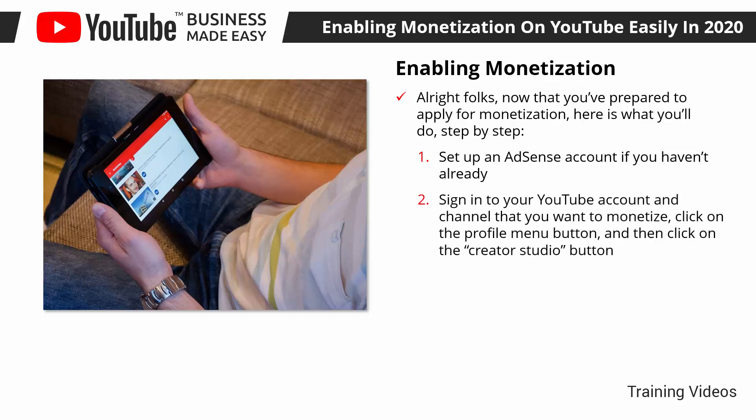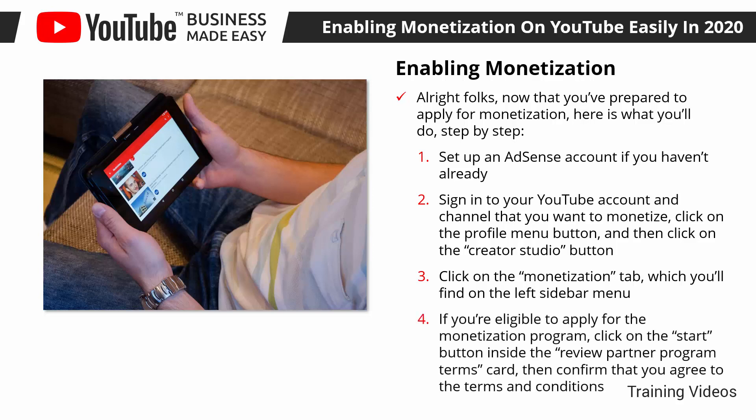Number 2: Sign in to your YouTube account and channel that you want to monetize. Click on the profile menu button, and then click on the Creator Studio button. Number 3: Click on the monetization tab, which you'll find on the left sidebar menu. Number 4: If you're eligible to apply for the monetization program, click on the Start button inside the review partner program terms card.